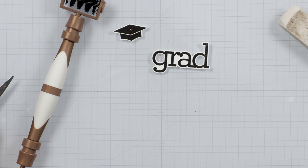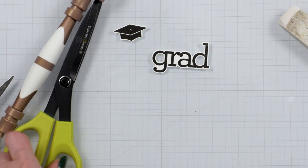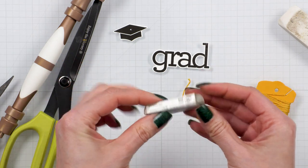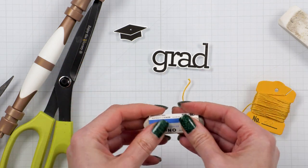Now to make the tassel I used yellow DMC floss. You'll also need some sort of object to wrap the floss around when making the tassel. The process is very similar to making a pom pom.